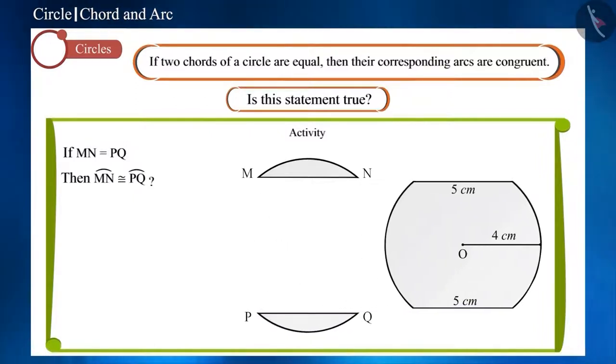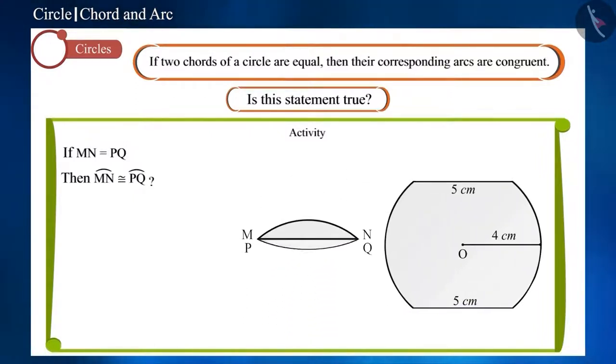Friends, now place these two parts on top of each other. You can see that they cover each other completely. That is, arc MN and arc PQ also cover each other completely. This shows that equal chords form congruent arcs. That is, the given statement is true.